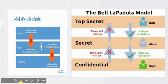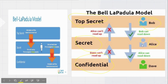In this model there are three very important layers: top secret, secret, and confidential. As you can see here in the flow, Bob who is working on the top secret position can read the data of Alice, because Alice is working on the secret position, and Alice can read the data of Dave who is working on the confidential position.